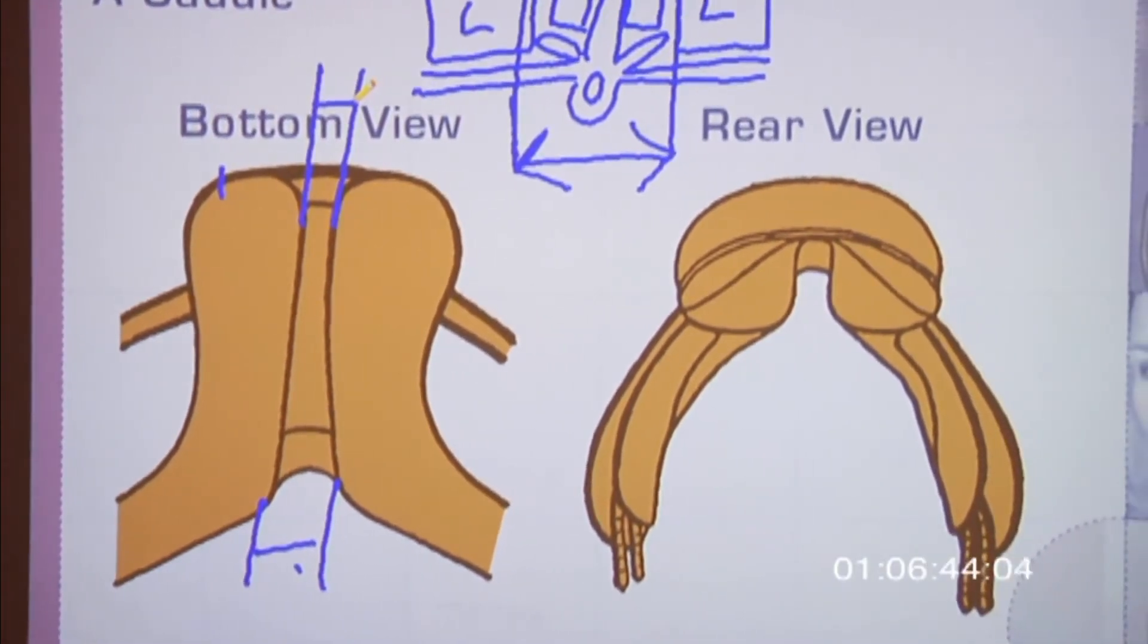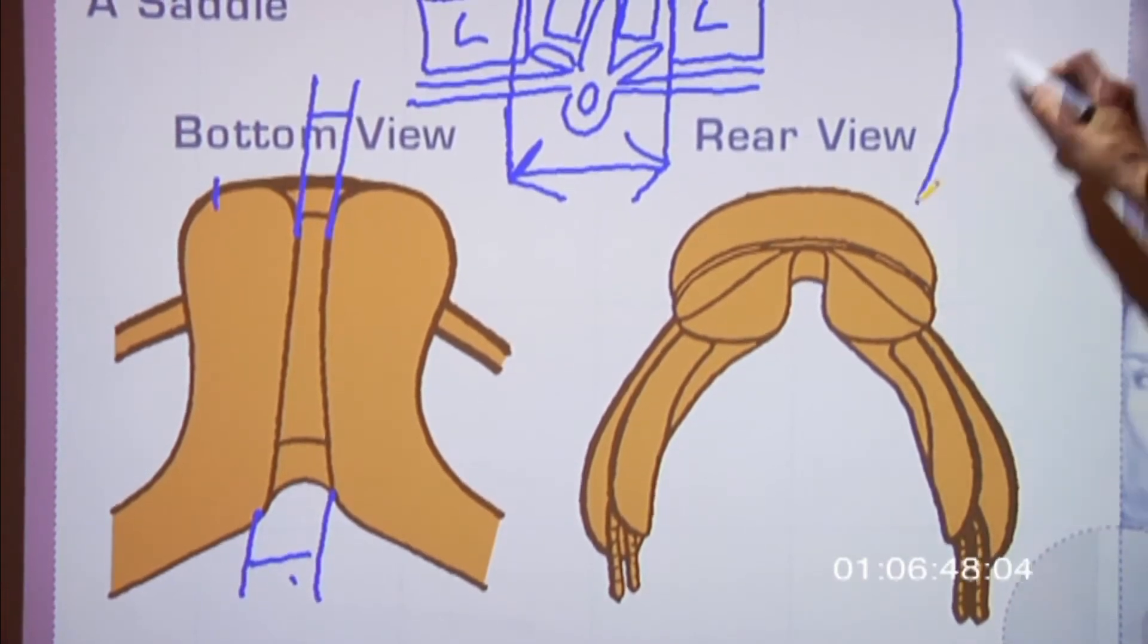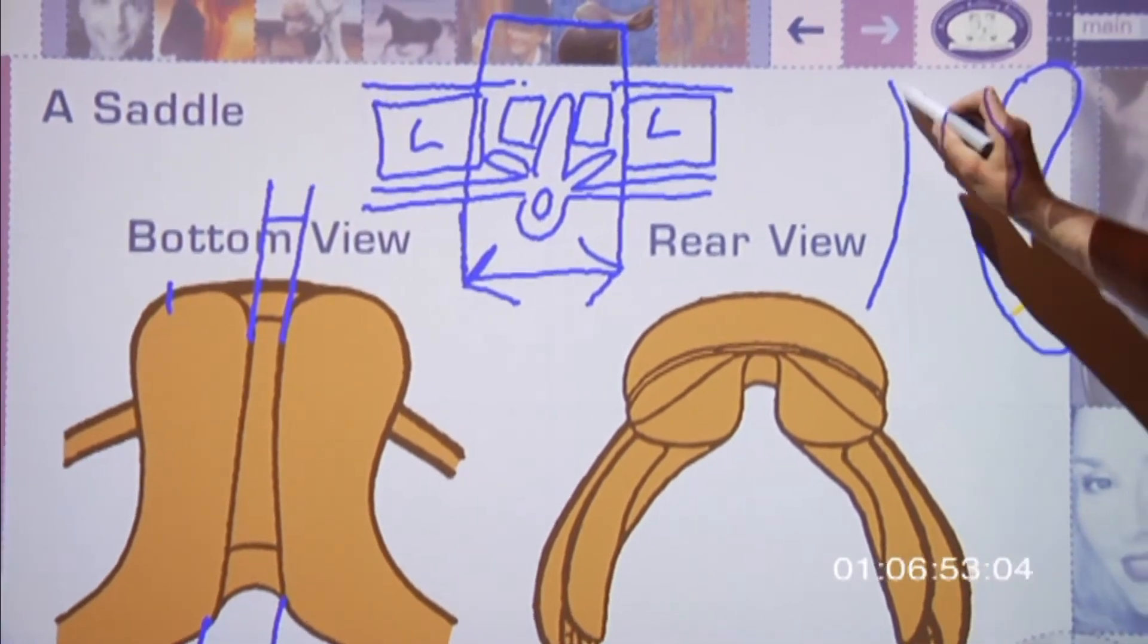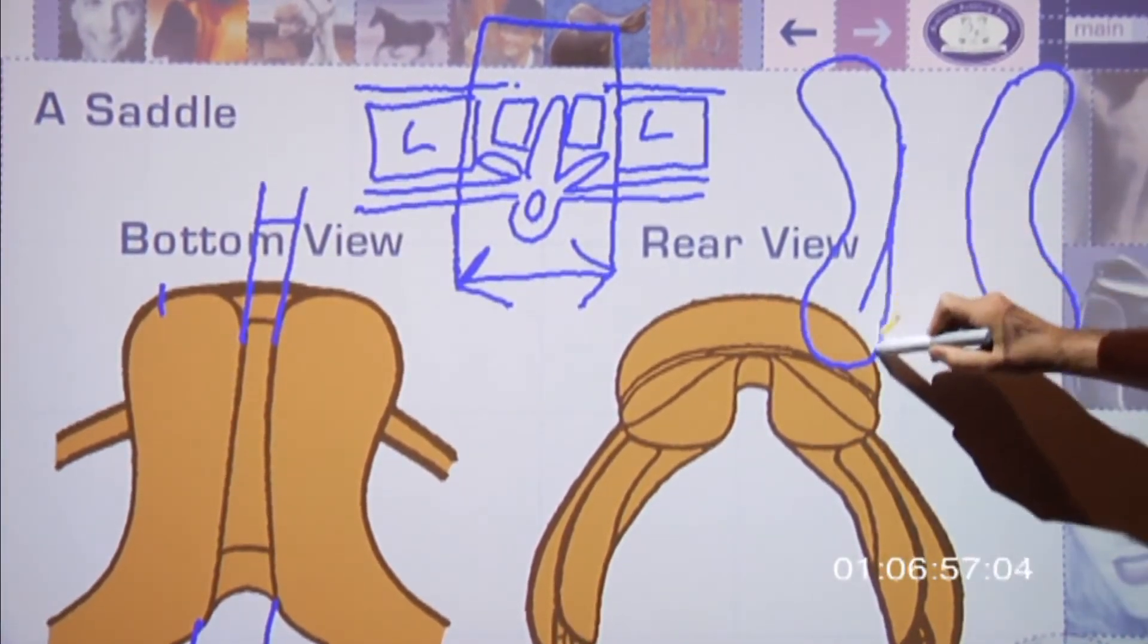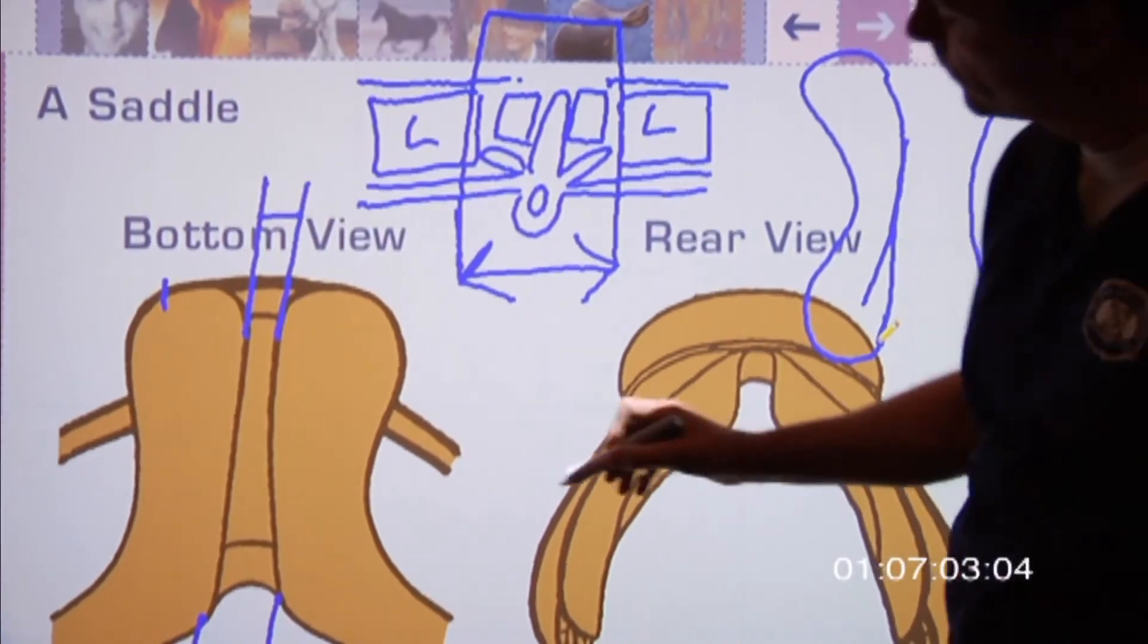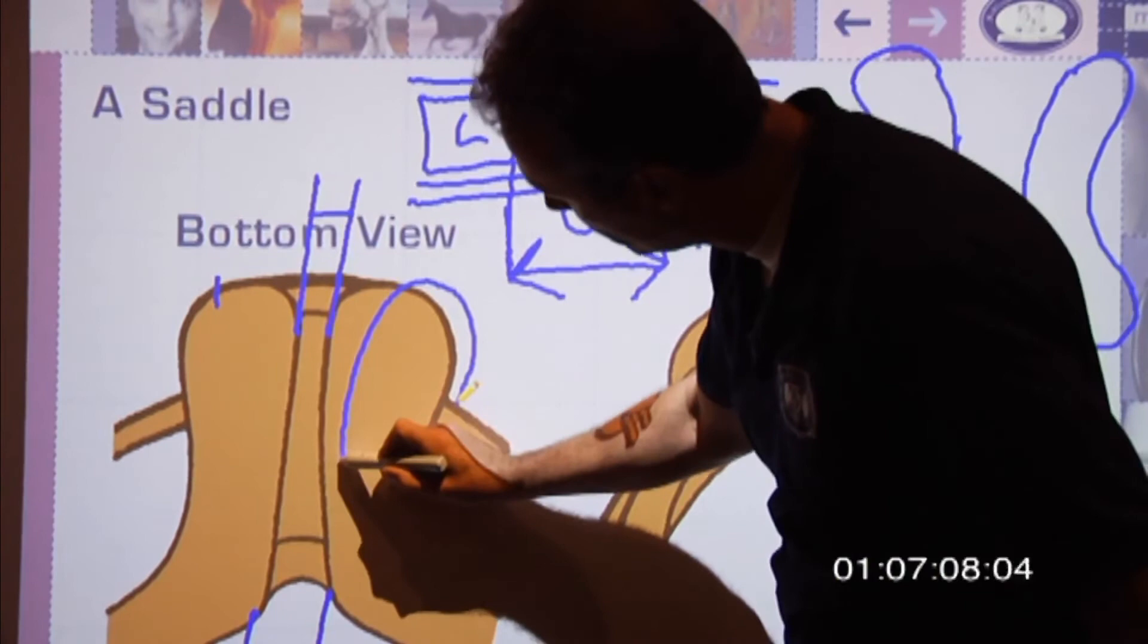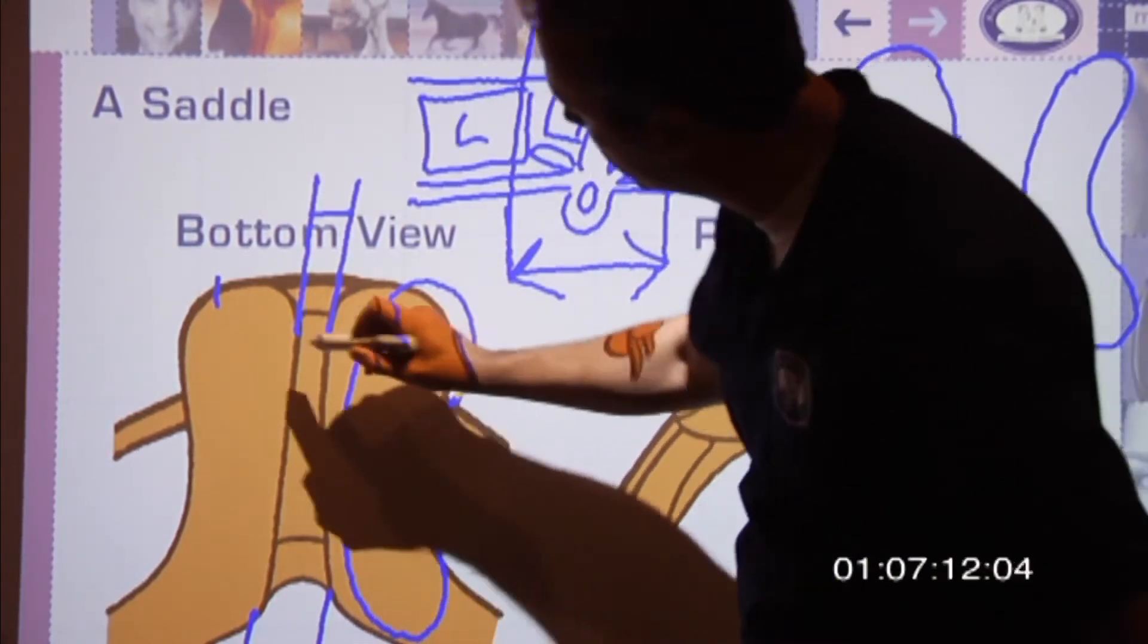Well if we go back 150 years, the gullet actually looked like that - the army saddles, the western saddles today. This is the bird's eye view, the bottom view of the saddle. So if I put this tracing over here, that was the pad, how they used the panels, how they used to look.